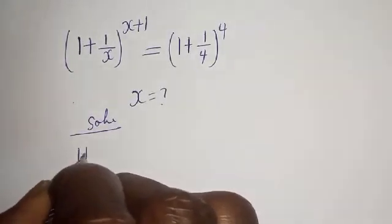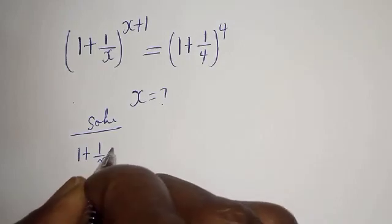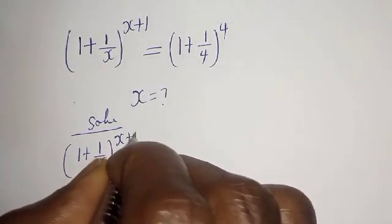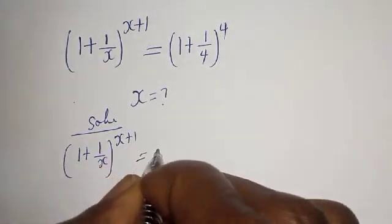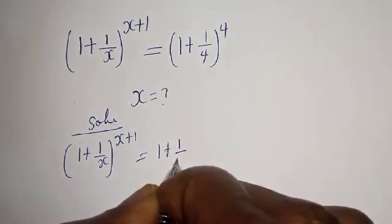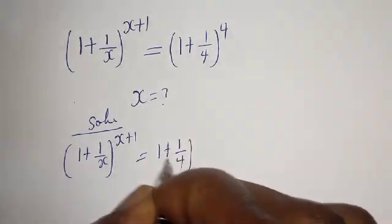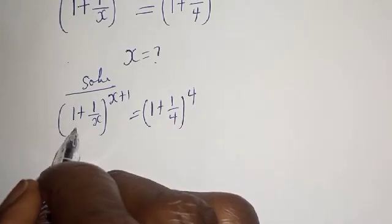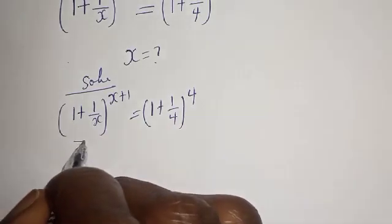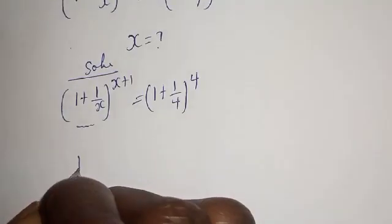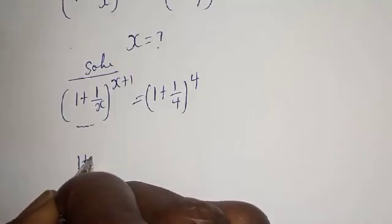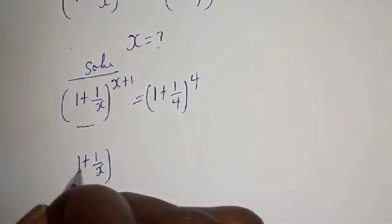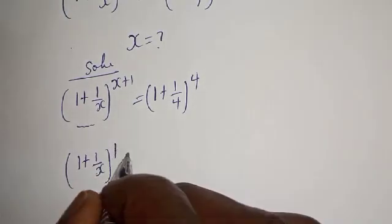1 plus 1 over s, to the power of s plus 1, is equal to 1 plus 1 over 4, to the power of 4. Let's consider the base of the left hand side, that is 1 plus 1 over s, to the power of 1.